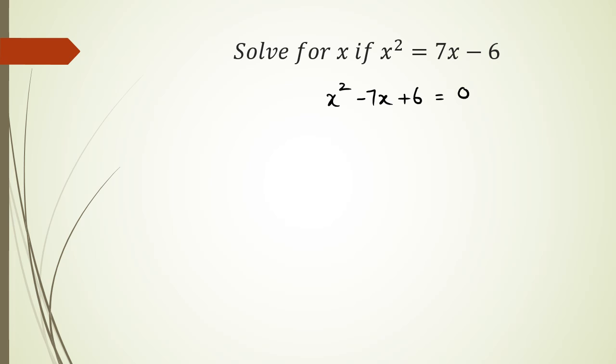And now factorizing this, I'm looking for two numbers that multiply to 6 and add to negative 7. Well, I made it easy for you guys in this case. So two numbers multiplying to 6 and adding to negative 7, I'm looking at negative 6 and negative 1. All right, so that means I've got x minus 6 multiplied by x minus 1 equals to 0.